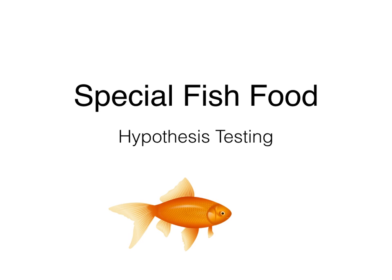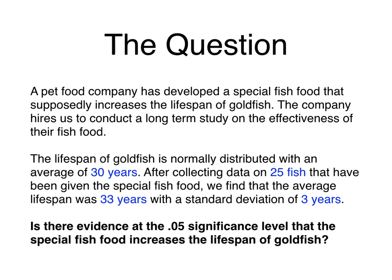In this video, we will be conducting a hypothesis test on the effectiveness of special fish food for increasing the lifespan of a goldfish. A pet food company has developed a special fish food that supposedly increases the lifespan of goldfish, and the company hires us to conduct a long-term study on its effectiveness. Suppose the lifespan of goldfish is normally distributed with an average of 30 years. After collecting data on 25 fish that have been given the special fish food, we find that the average lifespan was 33 years with a standard deviation of 3 years.